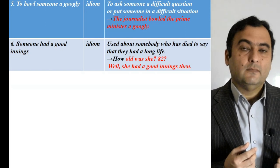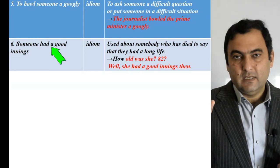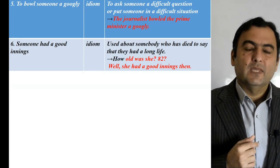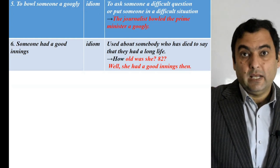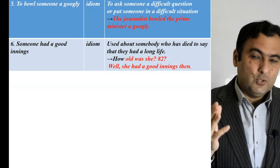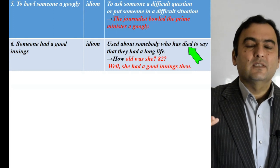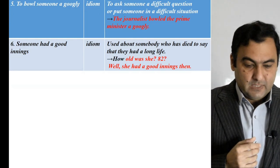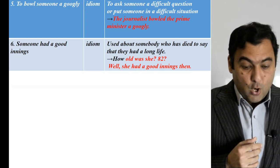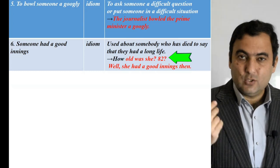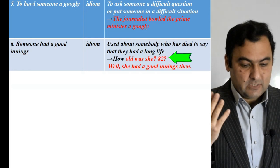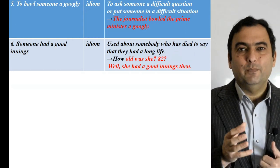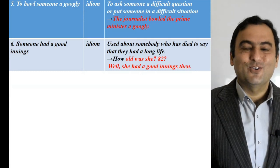The last idiom is somebody has had a good innings. Note that innings ends in S but is singular. Somebody has had a good innings means somebody has had a long, maybe healthy life. We usually say it after the death of someone who lived a long life. For example: someone dies at 82, and you say, 'Well, she had a good innings then' — meaning she had a great, long life. I hope you will also have a good innings in life and in English.